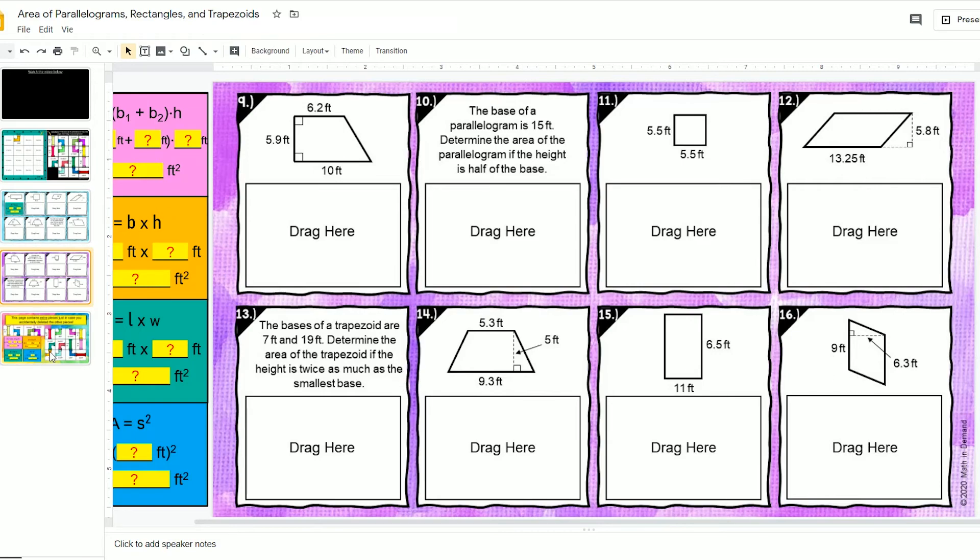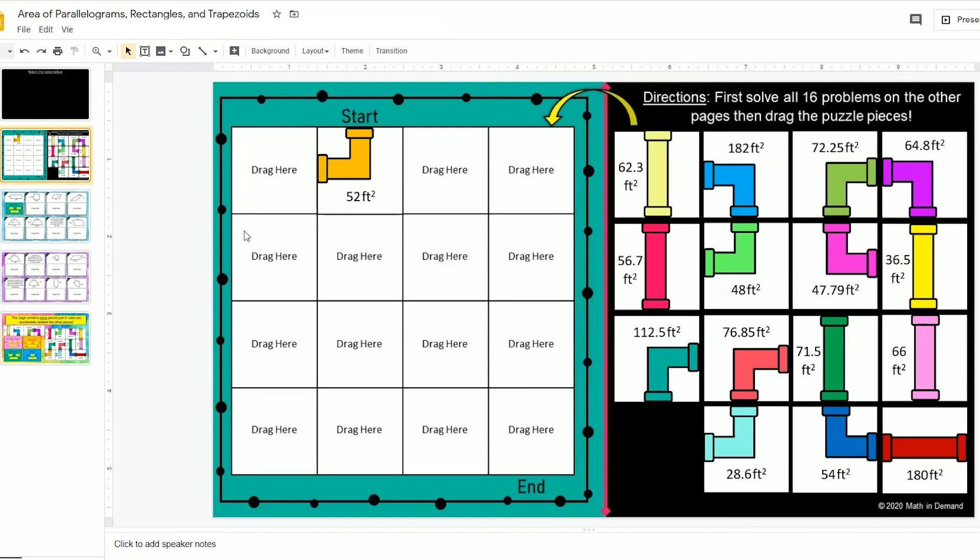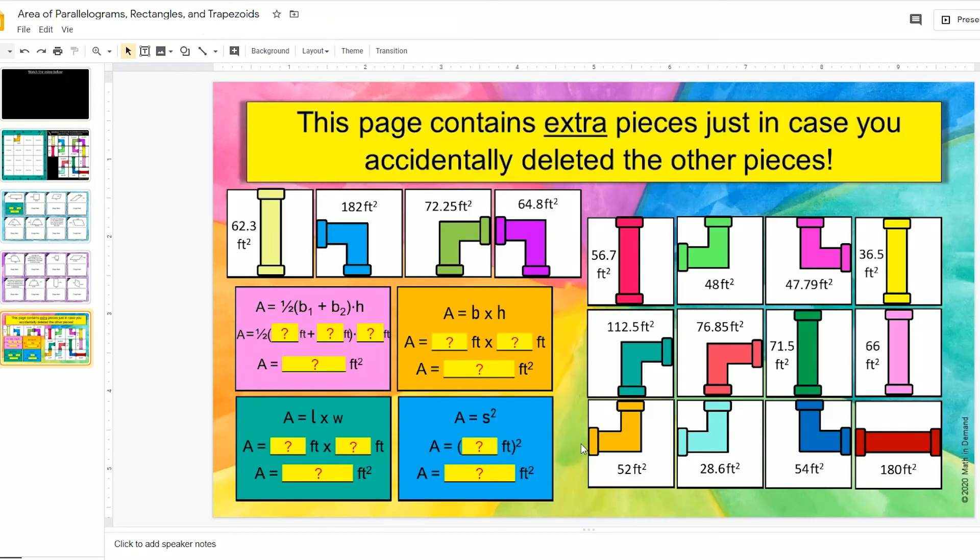On the very last page, this is just in case you accidentally delete a puzzle piece. If you're on page 2 right here and you accidentally deleted this piece - that's 112.5 - and you're thinking it's gone and you can't complete the activity, come to the last page.